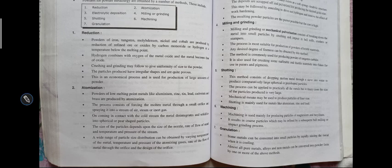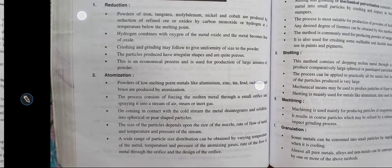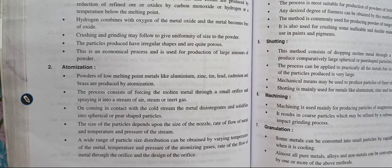This is an economical process and is used for production of large amounts of powder. The next process is atomization. This is a very important process. Powders of low melting point metals like aluminium, zinc, tin, lead, cadmium and brass are produced by the atomization process.